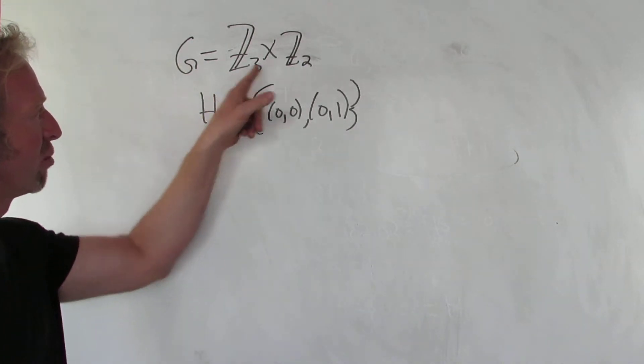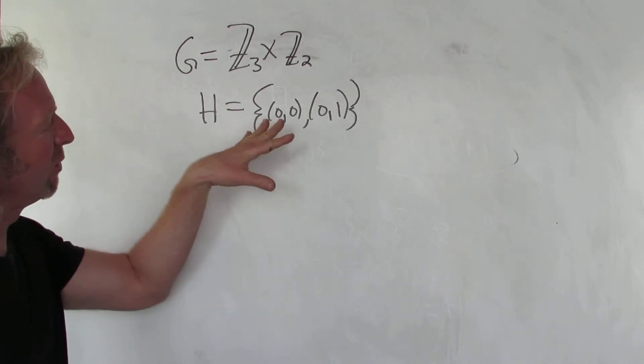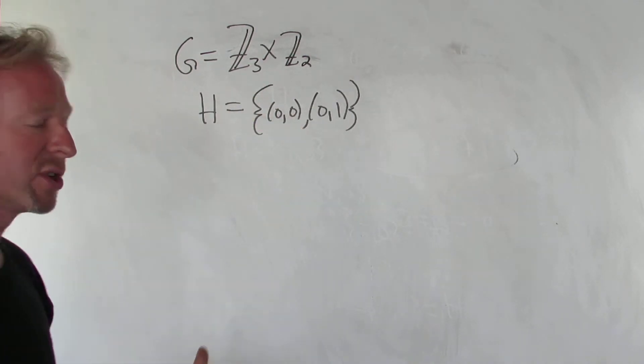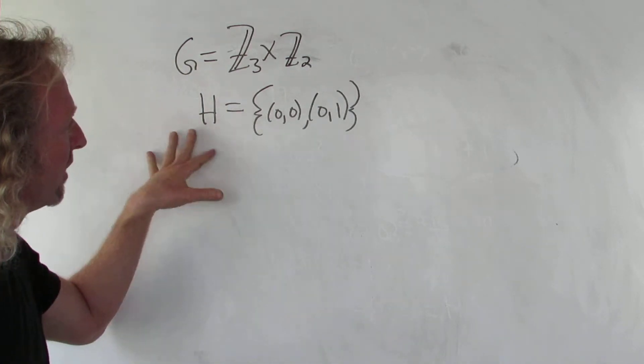Hey YouTube! So in this video we have a direct product of two cyclic groups, and we have H here. H is actually a subgroup of this group, and I just want to show you how to find all of the right cosets of H and G.